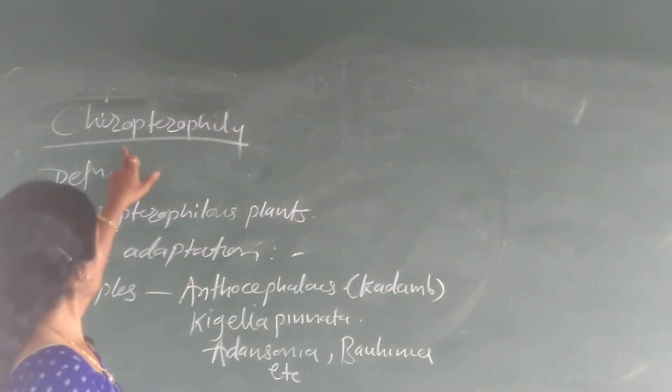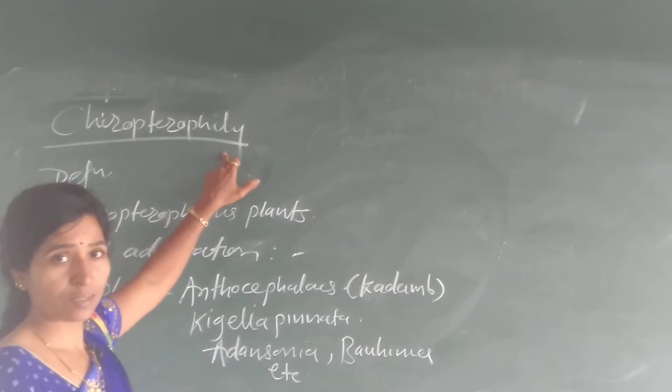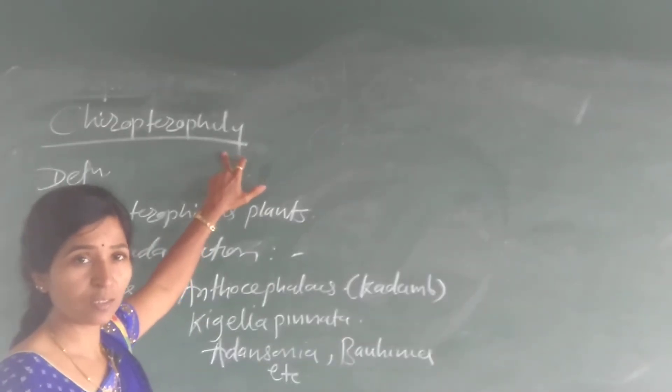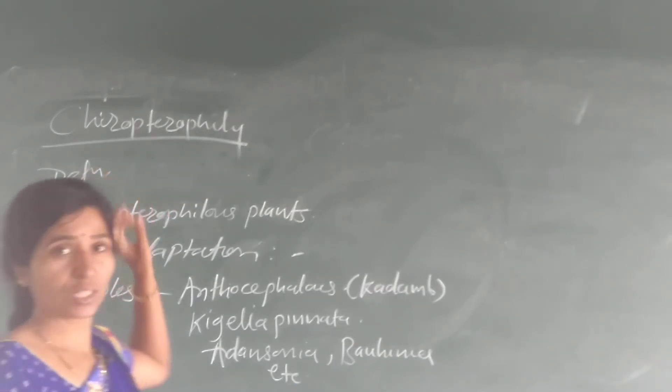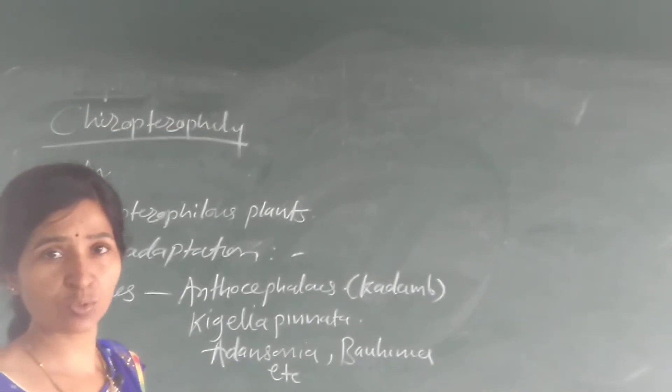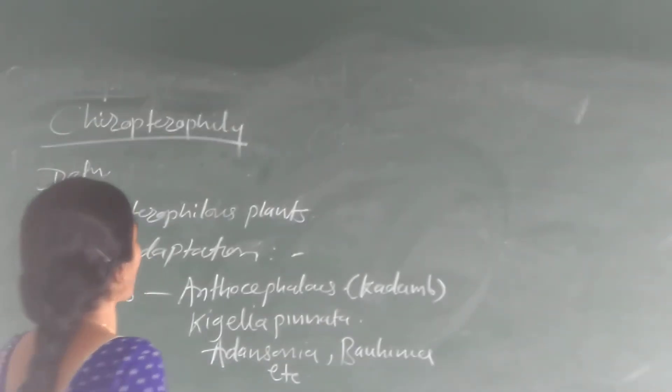My next point is Chiropterophy. First, we will see the definition. The pollination takes place through the agency of a bat.